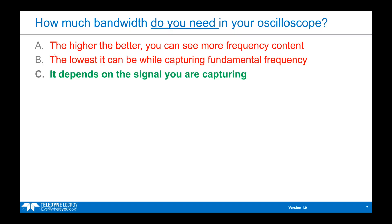Since some people answered choices A and B, I want to quickly explain why those are incorrect. Choice A is incorrect because while having a higher bandwidth oscilloscope may be desirable, it's not necessarily what you need to capture the important frequency content in your signal. Choice B is incorrect because while capturing the fundamental frequency is important, there is a lot of frequency content that occurs beyond this fundamental frequency.